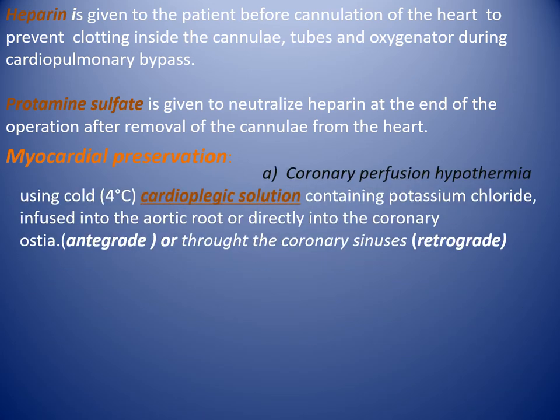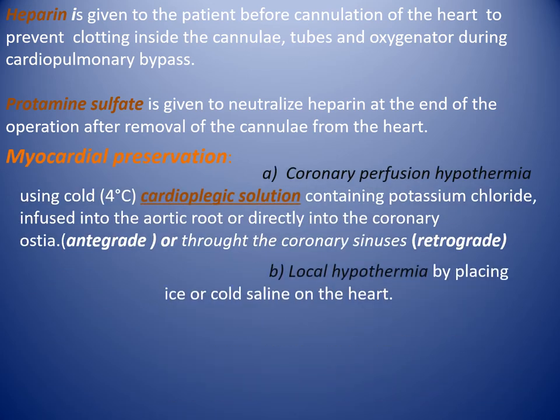Myocardial preservation. There are three types of myocardial preservation. Type A: cardioplegic reperfusion hypothermia, using cold 4 degrees centigrade cardioplegic solution containing potassium chloride, infused into the aortic root or directly into the coronary ostia.